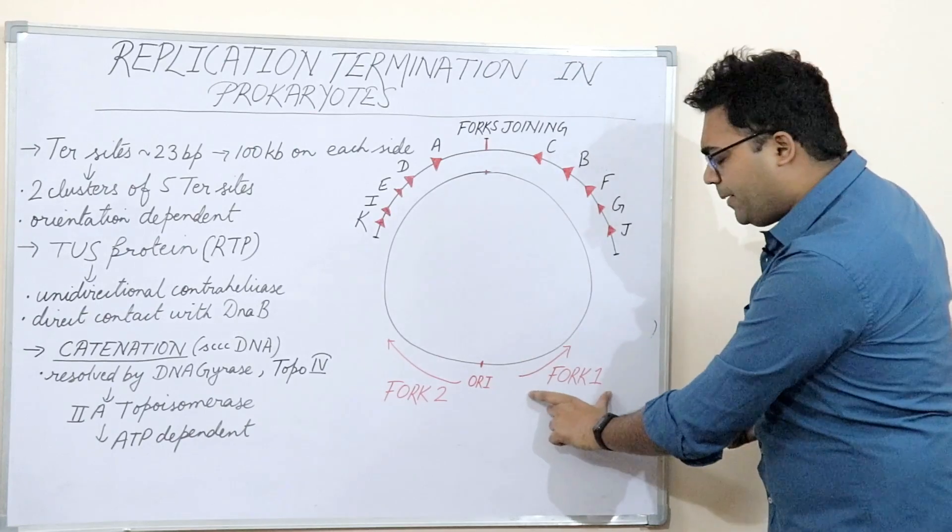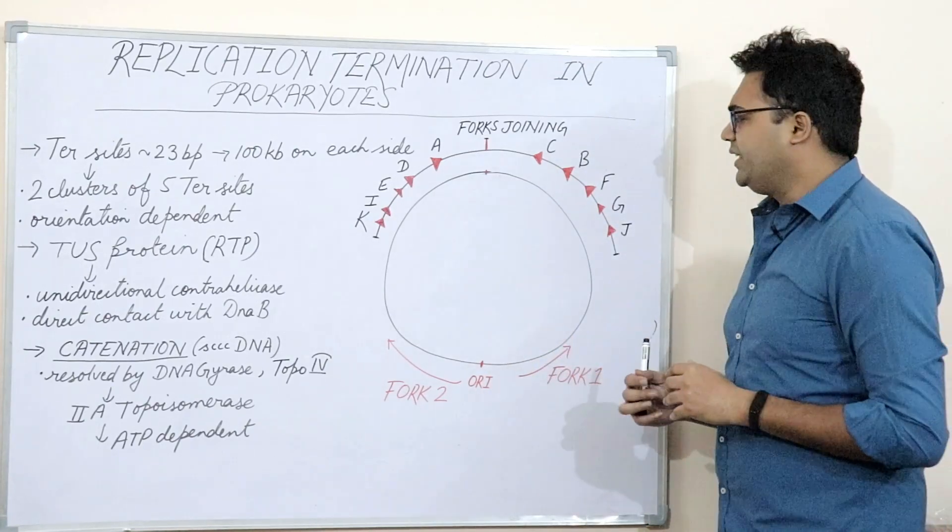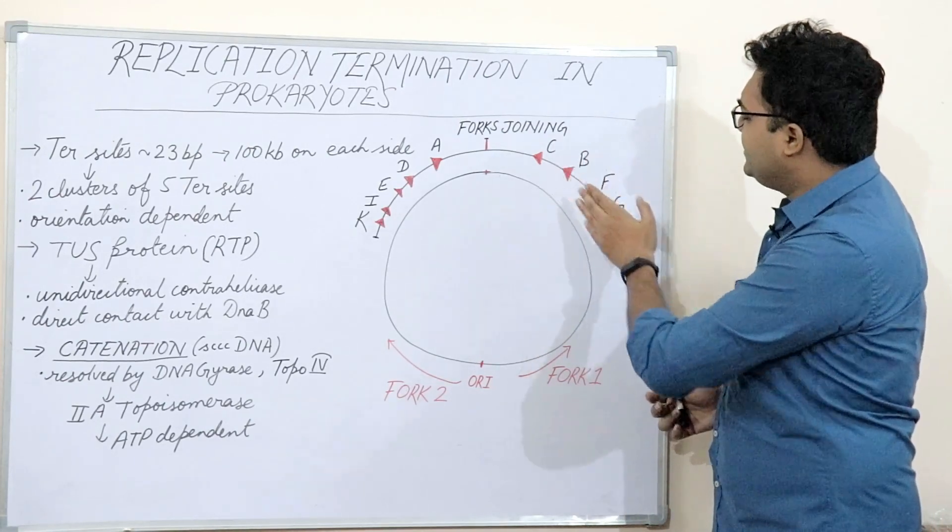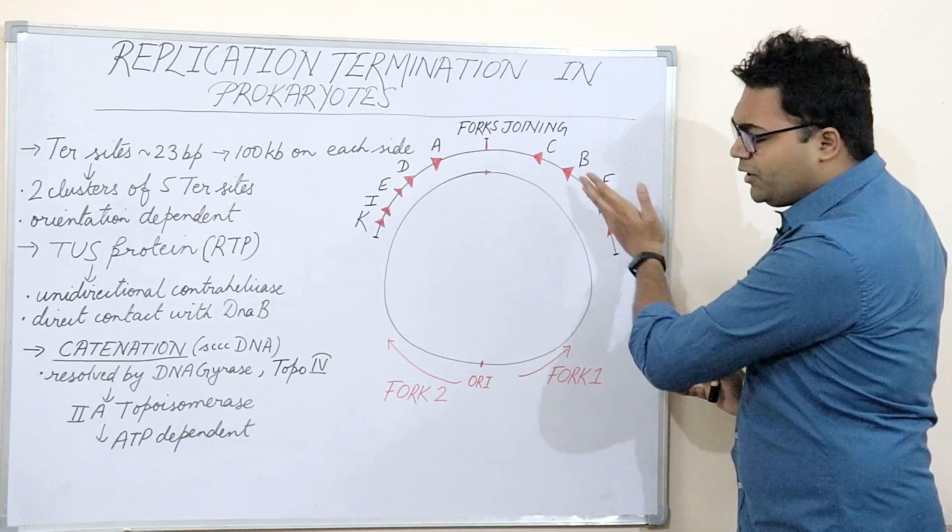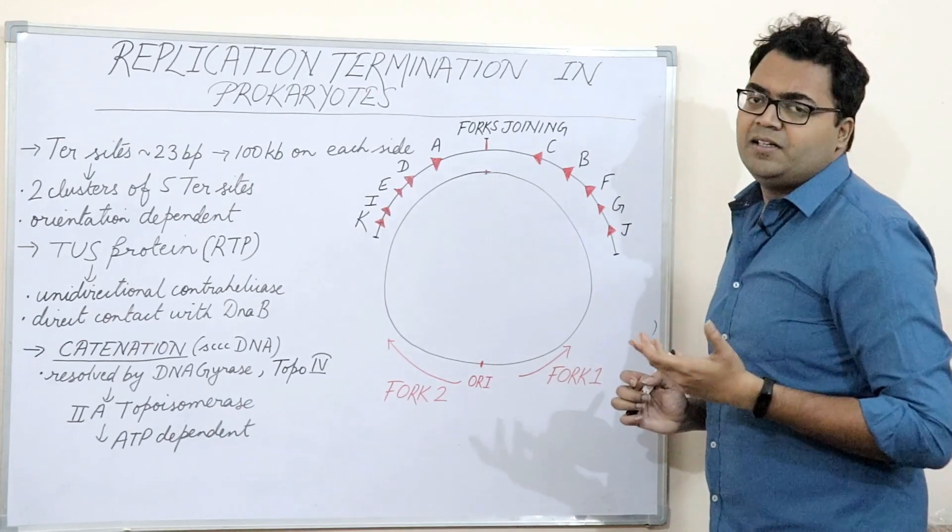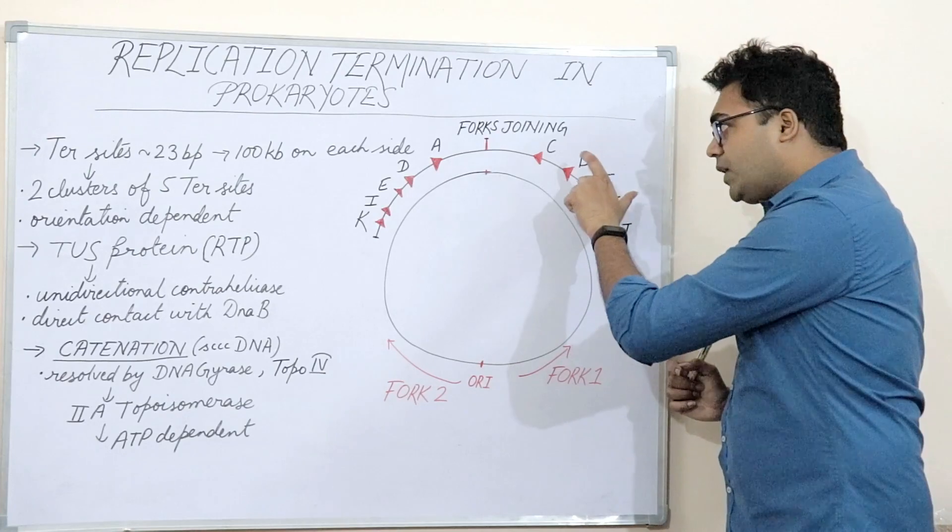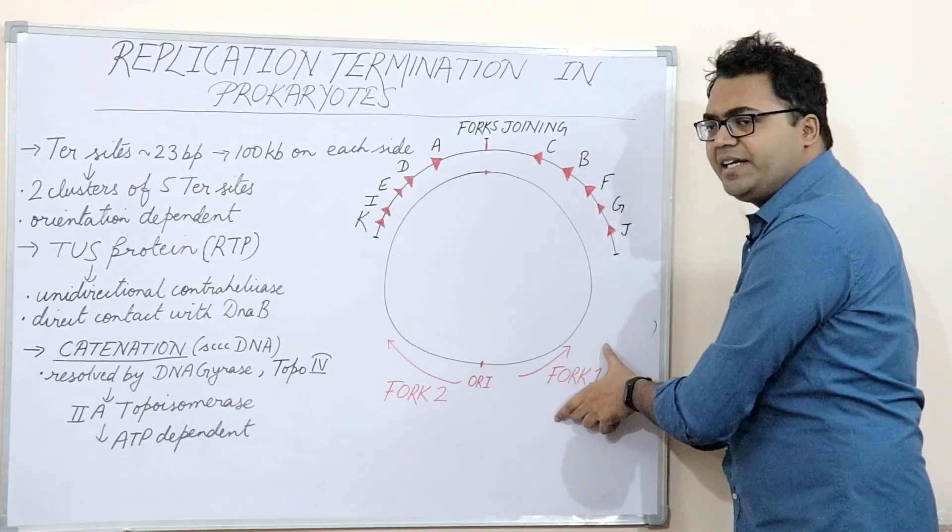So, let us take replication fork 1. After replication fork 1 starts traversing, it reaches J, G, F, B and C. You can see the direction of the replication fork and the direction of these termination sequences coincide. They are of the same direction. So, they are vectorial in nature and they become permissible ends or permissible ter sites specifically for replication fork 1.